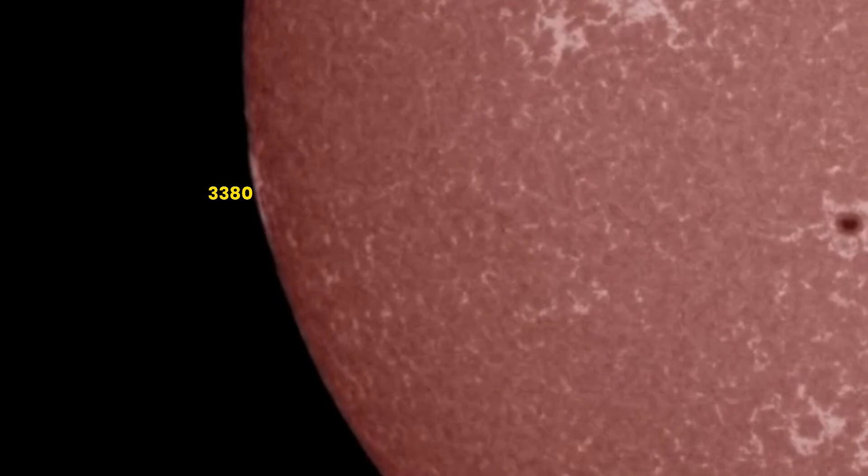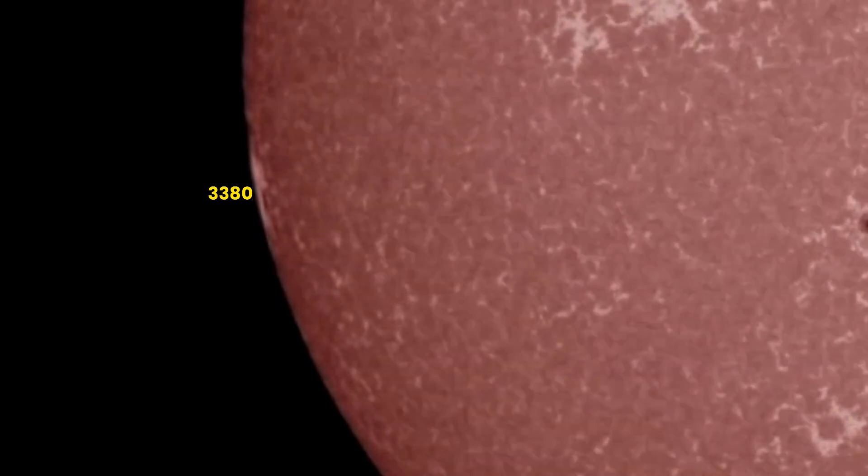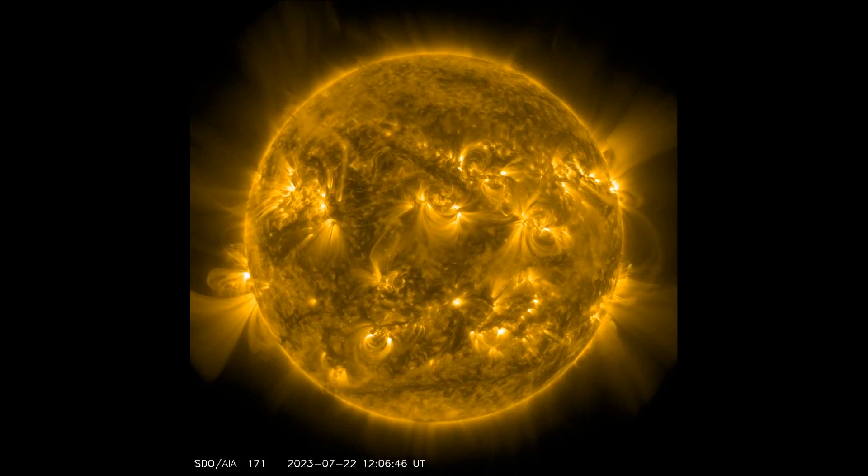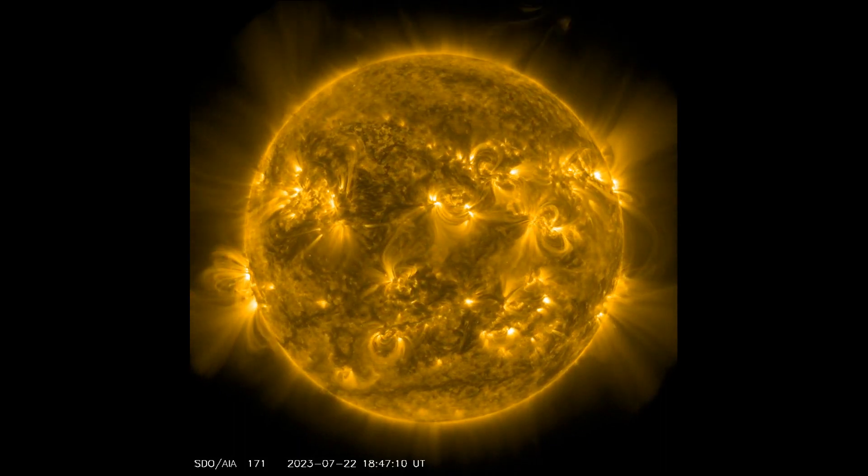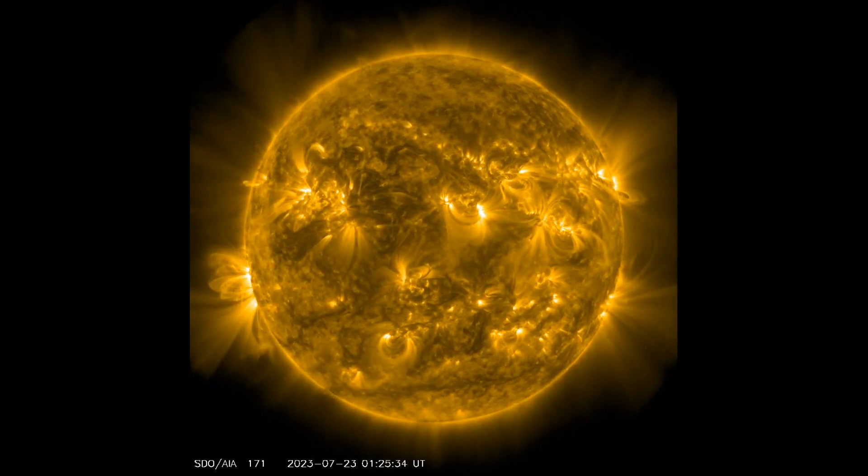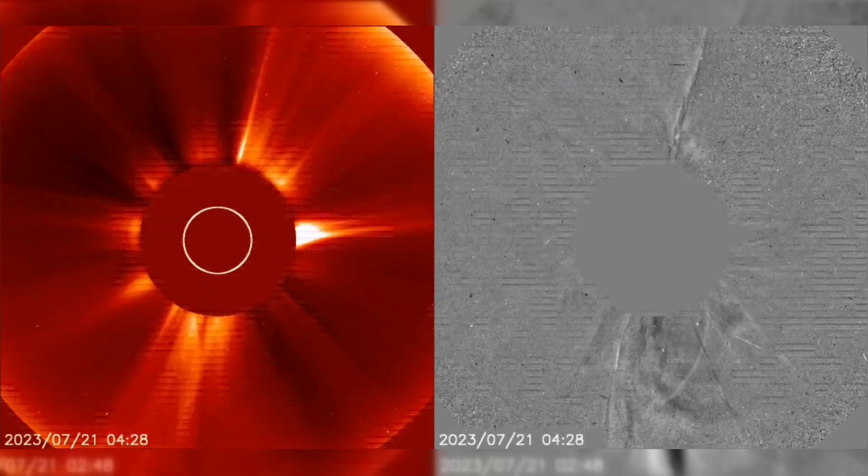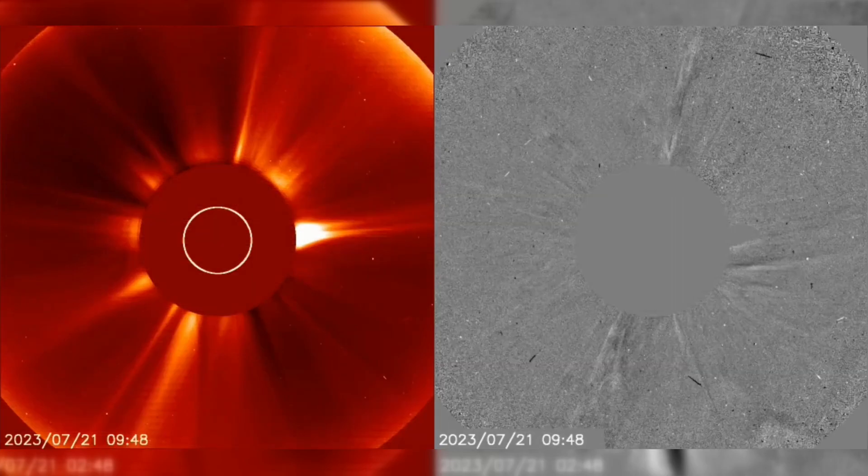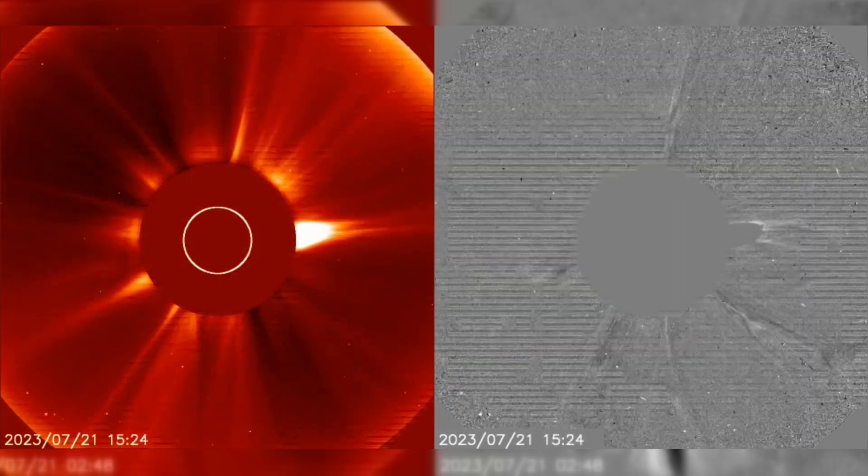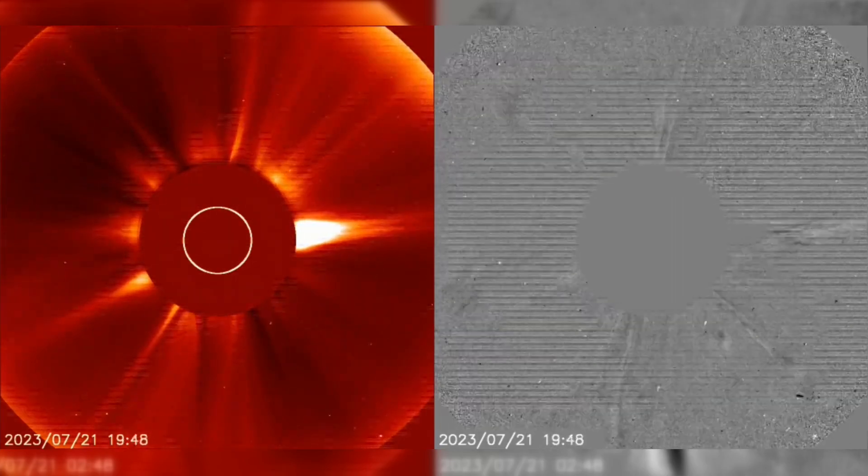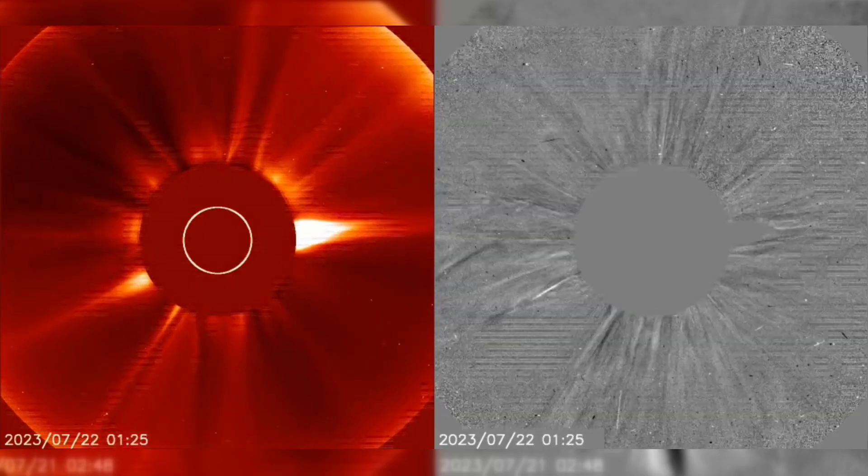A new region, Region 3380, was numbered during this period. Additionally, an approximately 10-degree filament eruption occurred starting at 221558 UTC. Analysis is ongoing to determine if there is a potential Earth-directed component in the associated coronal mass ejection.